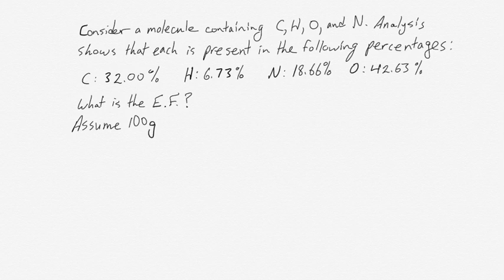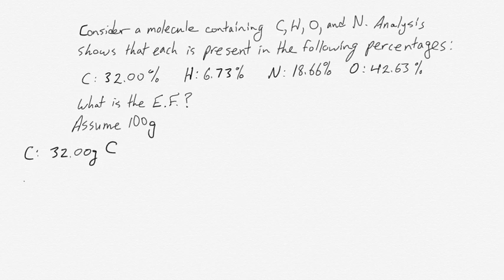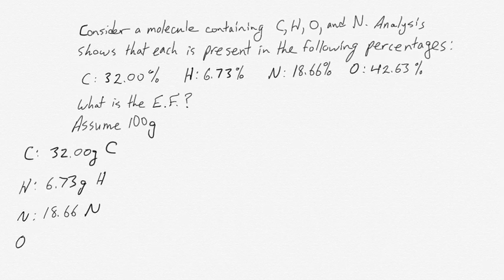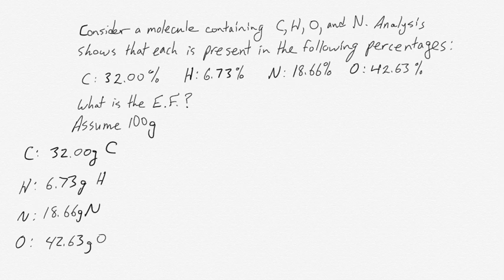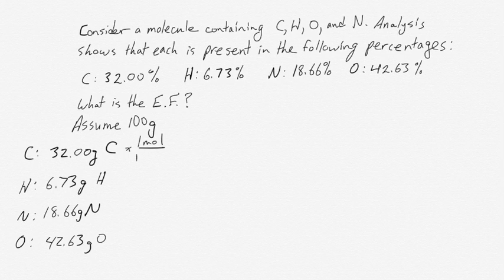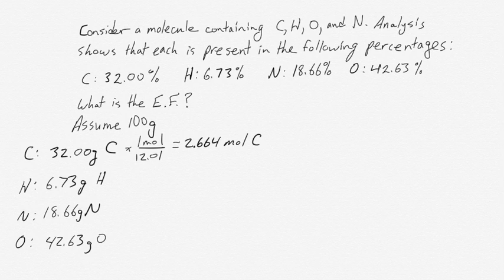So 32% carbon means 32 grams of carbon. We write down 32.00 grams of carbon, 6.73 grams of hydrogen, 18.66 grams of nitrogen, and 42.63 grams of oxygen. Once we have masses, converting them to moles is very easy. We use the molecular weights from the periodic table. One mole of carbon atoms weighs 12.01 grams, which means we have 2.664 moles of carbon atoms.